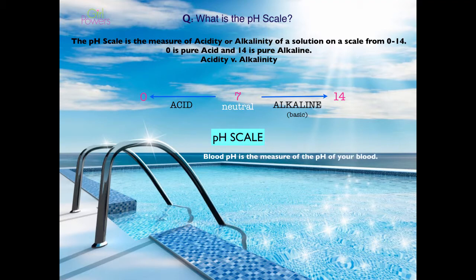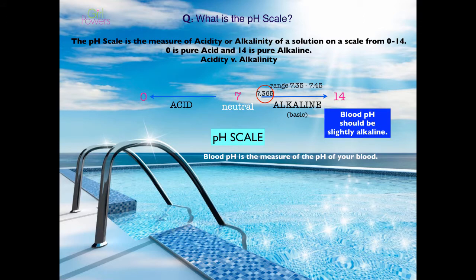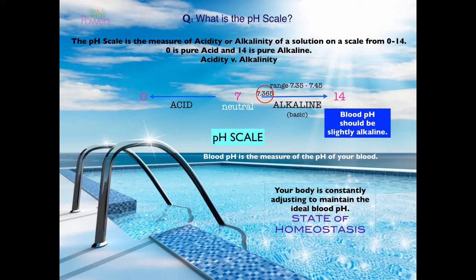The blood pH is the measure of the pH of your blood. The very specific number is 7.365, and they look for a range between 7.35 and 7.45. So the blood pH should be slightly alkaline — on the alkaline side of the scale. Your body is constantly adjusting to keep it there, to maintain the ideal blood pH — a state called homeostasis, the ideal state where your body is not struggling.